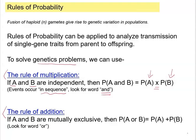Another rule is the rule of addition. We have event A and event B being mutually exclusive, so we're going to be looking for the word OR. We find probability A and probability B, and then we ask: what's the probability of event A or B happening?